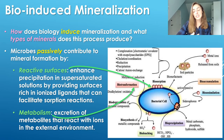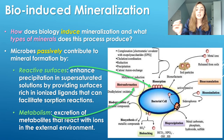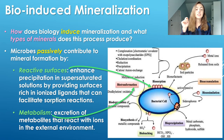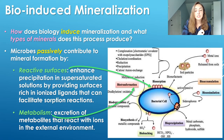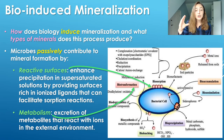Microbes passively contribute to mineral formation by using two main attributes: their reactive surfaces and their metabolism. Their reactive surfaces enhance precipitation in supersaturated solutions — meaning solutions supersaturated with respect to the ions involved in the mineralization process of a specific mineral. In these solutions, these reactive surfaces enhance precipitation by providing surfaces rich in ionized ligands that can facilitate absorption reactions. Really, all it means is that, like we talked about in the previous bioabsorption video, bacterial cell walls in general have generally negatively charged cell surfaces. There are exceptions that have positively charged cell surfaces.